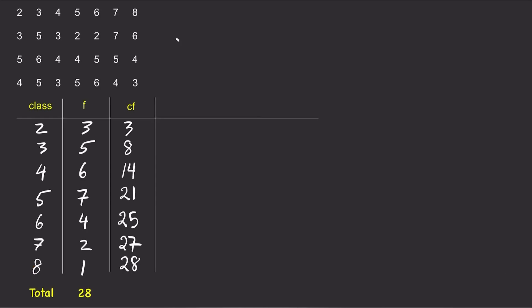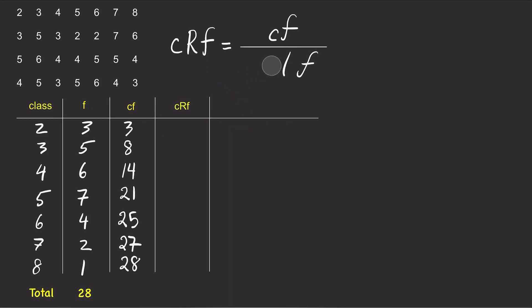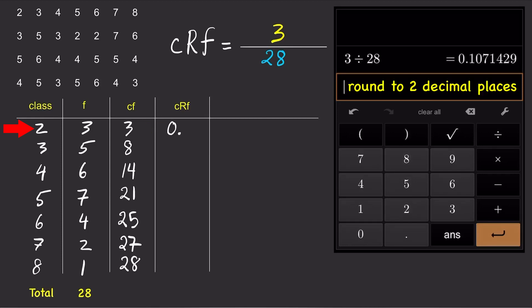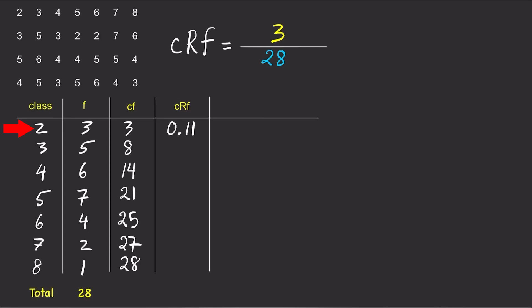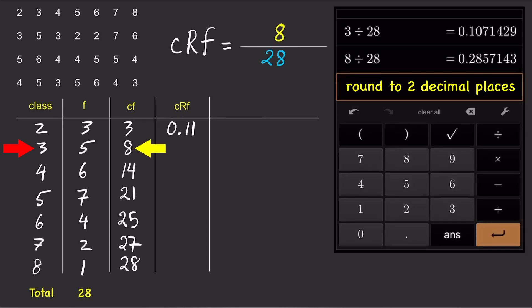Again, the cumulative relative frequency can be calculated by simply taking the cumulative frequency for each class and dividing it by the total frequency. So for the first class, 2, the CRF is 3 divided by 28 equals 0.11. And for the second class, 3, the CRF is 8 divided by 28 equals 0.29.